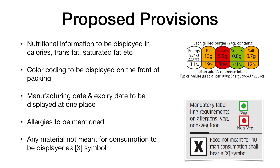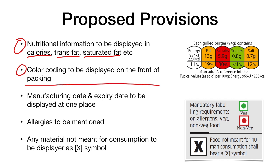Apart from color labeling, there are many other proposed provisions that FSSAI is going to implement. The first provision is that nutritional information — calories, trans fat, saturated fat, etc. — must be displayed on every food package. The second provision is that color coding should be displayed on the front of the packaging, using red, orange or yellow, and green.